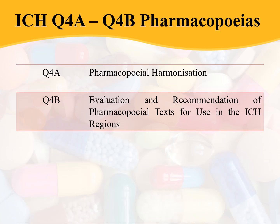The next category is ICH Q4A to Q4B, which mainly deals with pharmacopoeial harmonization. Q4A deals with pharmacopoeial harmonization, and Q4B deals with evaluation and recommendation of pharmacopoeial text for use in ICH regions.